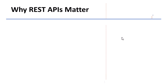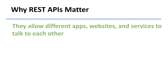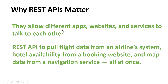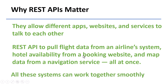So why do REST APIs matter? They allow different apps, websites, and services to talk to each other, even if they are built in different programming languages or run on different systems. For example, a travel app might use a REST API to pull flight data from an airline system, hotel availability from a booking website, and map data from a navigation service — all at once. Thanks to REST APIs, all these systems can work together smoothly to give you a great experience, even though they are completely separate behind the scenes.